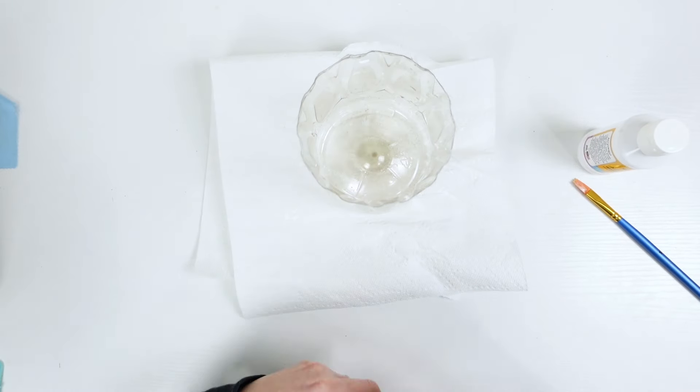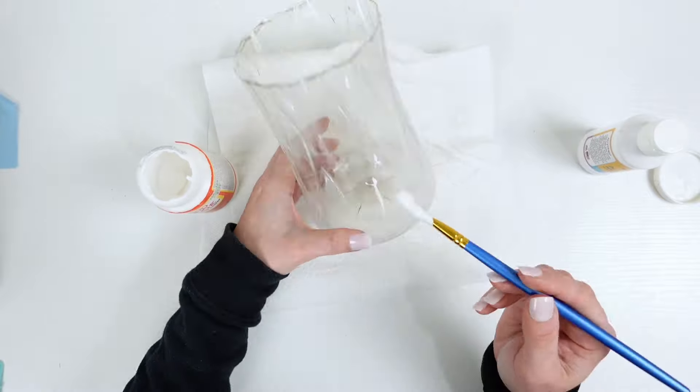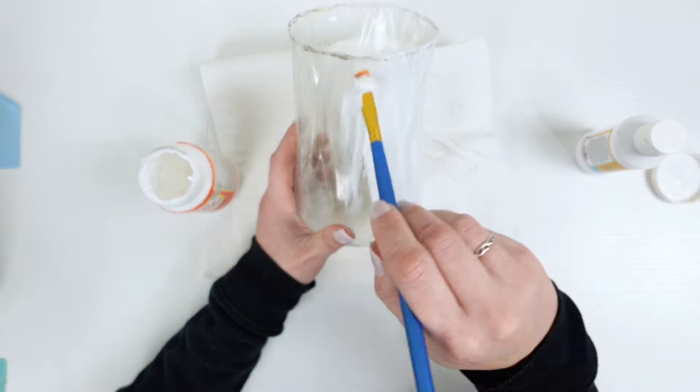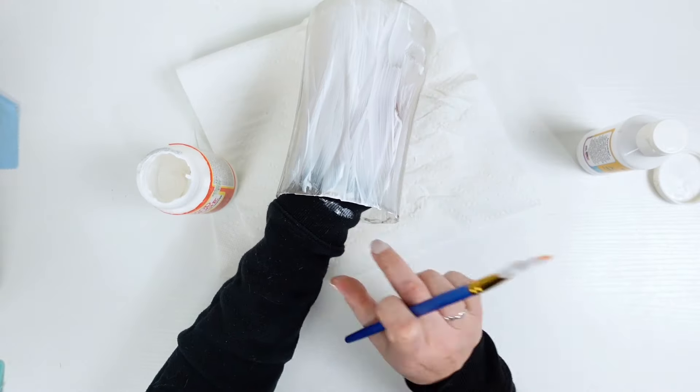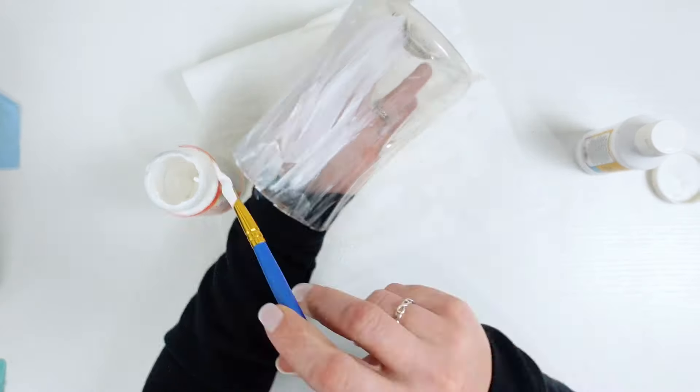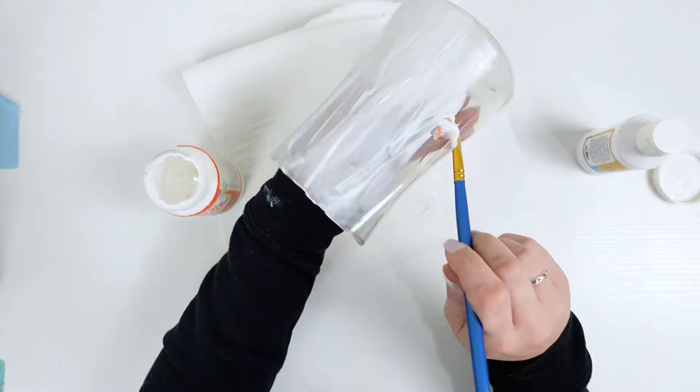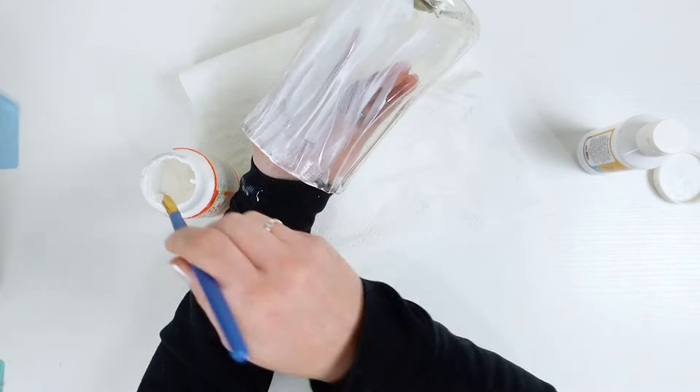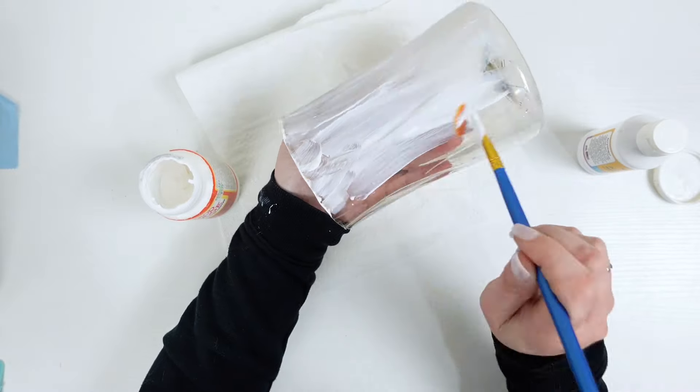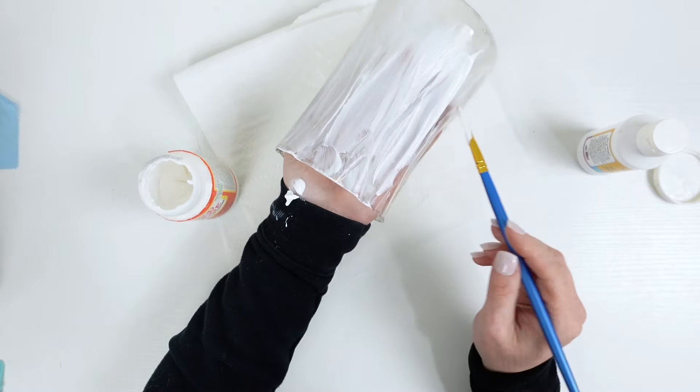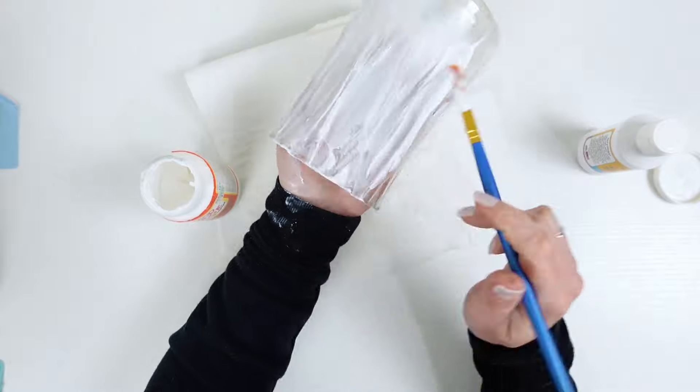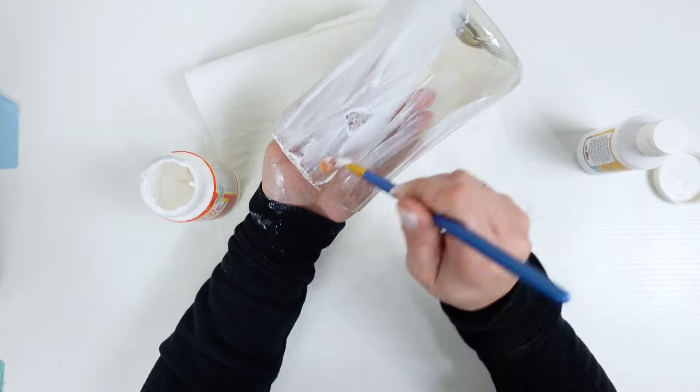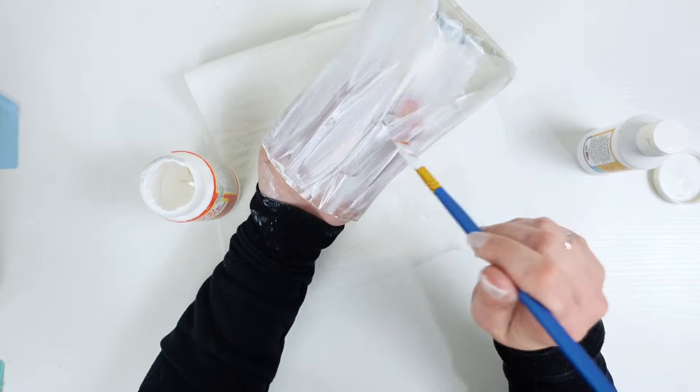So I am going to first Mod Podge the entire outside of the vase. And then I'm going to let it dry completely and come back in with two coats of paint. The Mod Podge works its magic, I guess you can say, dries on and gives the paint the ability to adhere onto the vase. Also from the Mod Podge, it gives it kind of like a plaster look. So I was super happy with how this turned out.